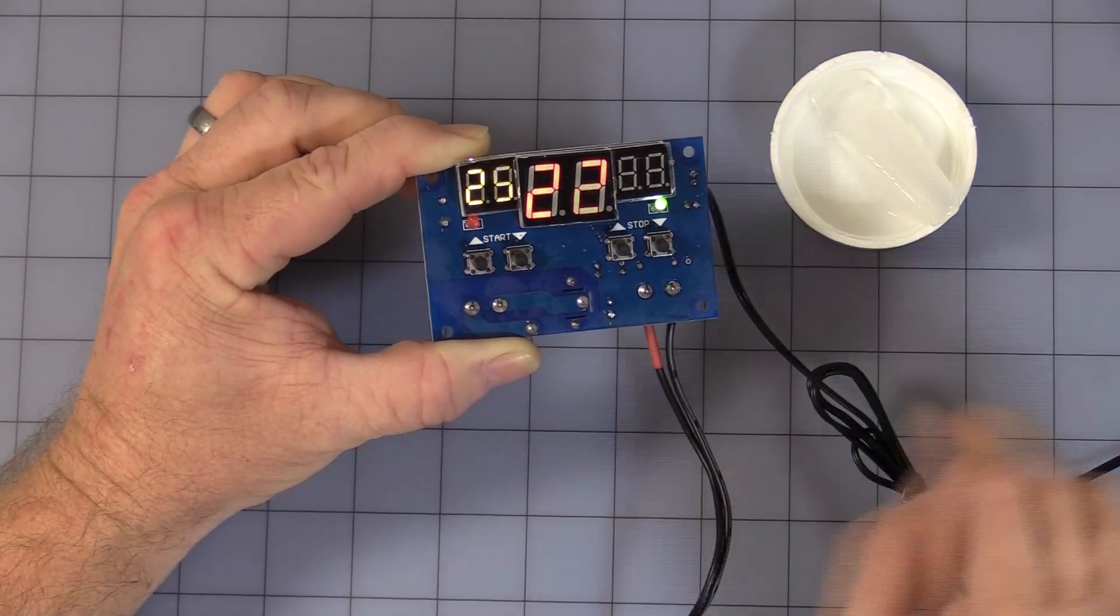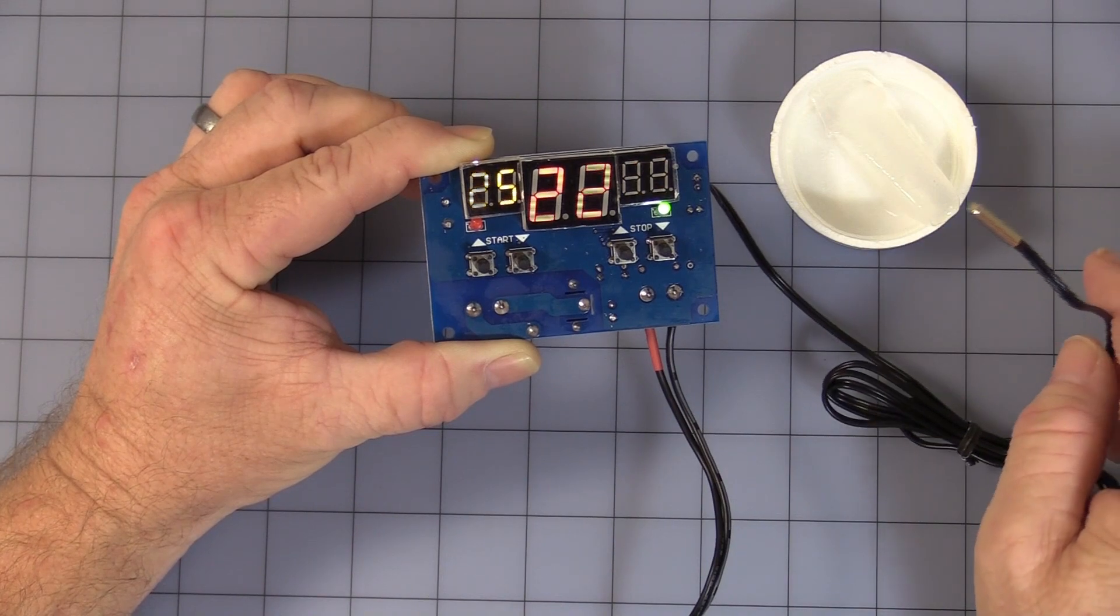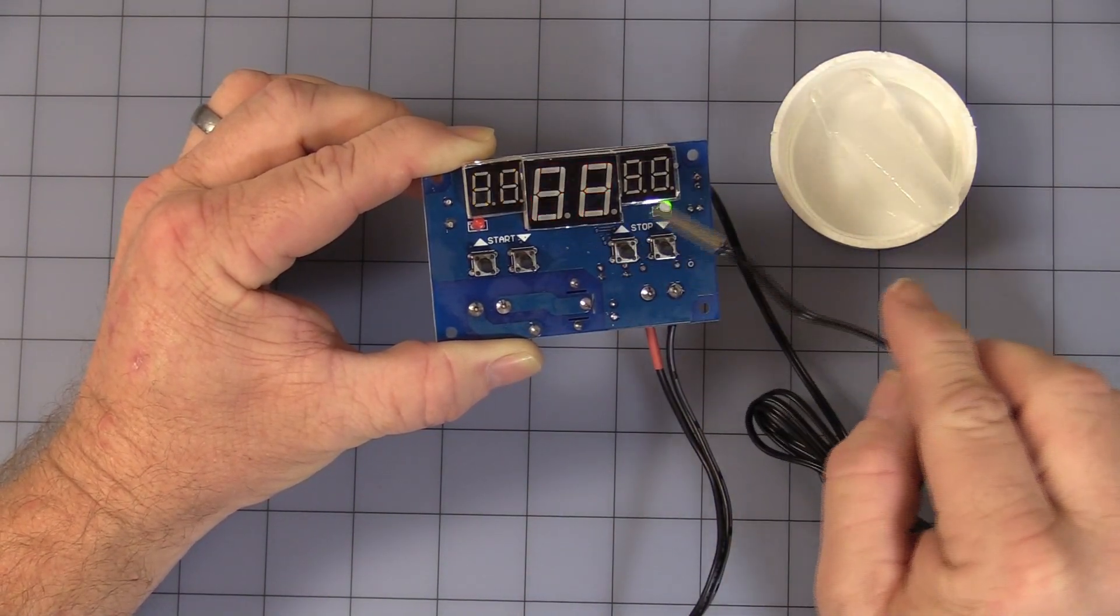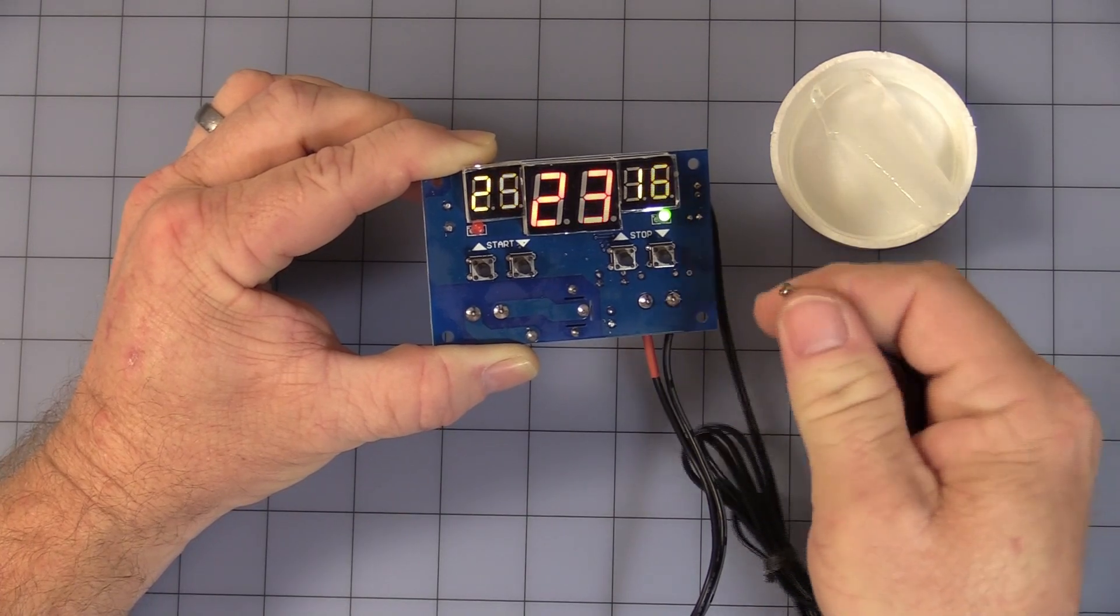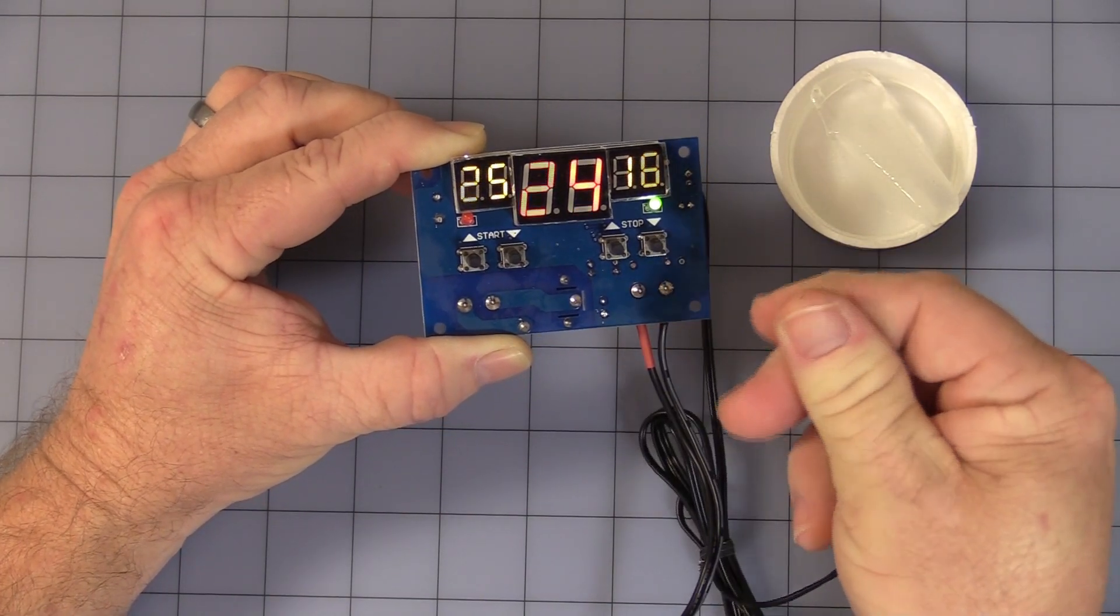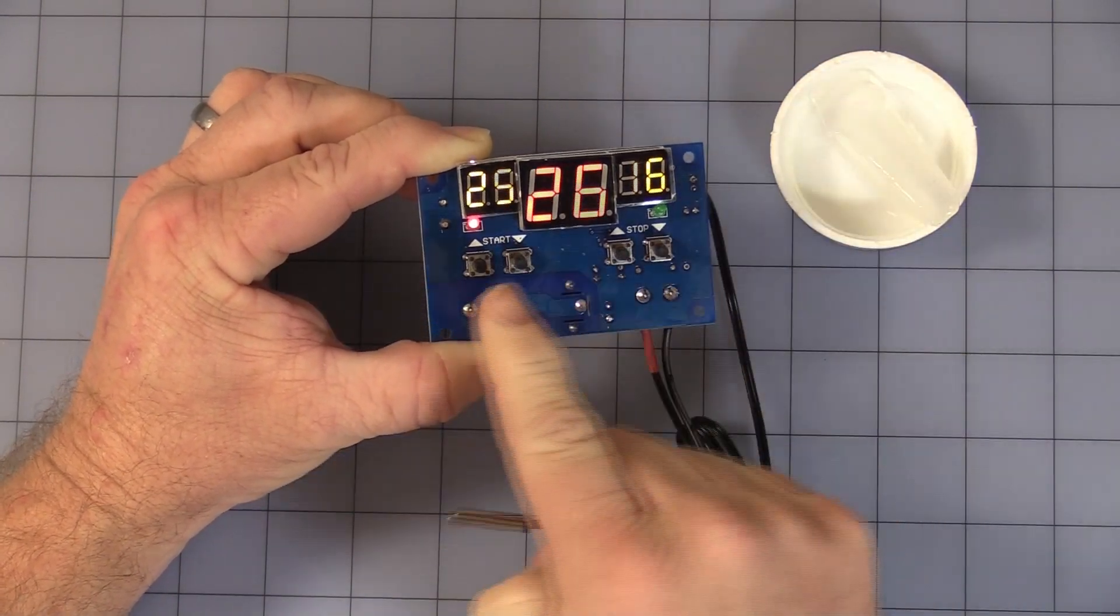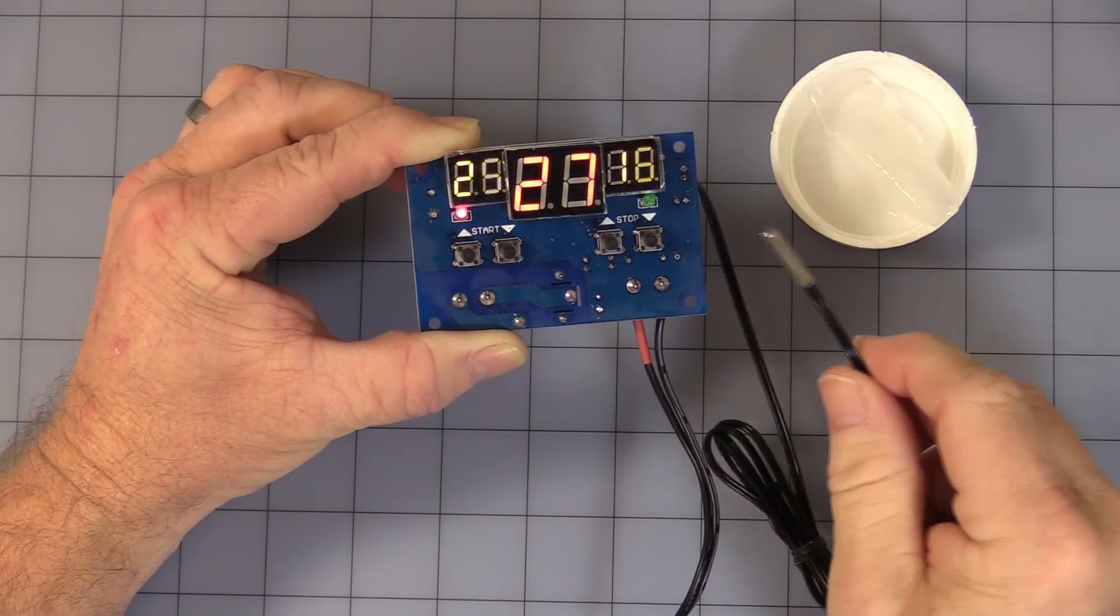Okay, we're now in cooling mode. So we have to heat up the probe. I'll use my fingers here until it gets to 25 degrees C, our relay start point. As you see, the relay turns on once it reaches 25. Now it won't turn off until it gets down to 16 degrees.